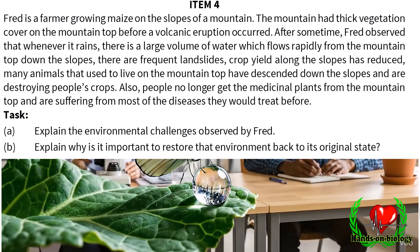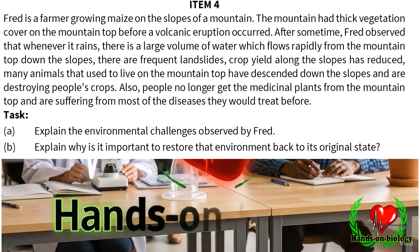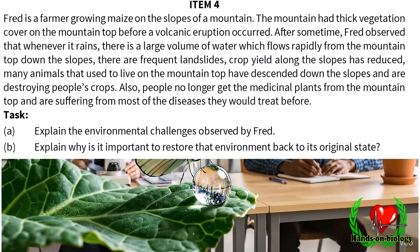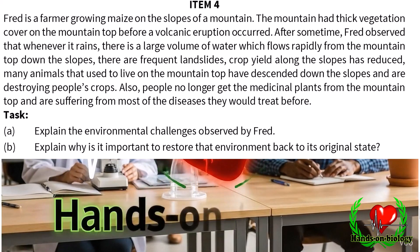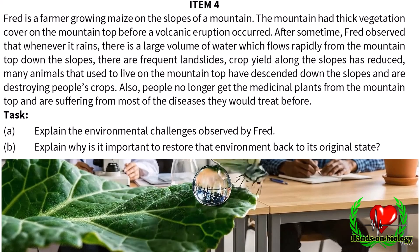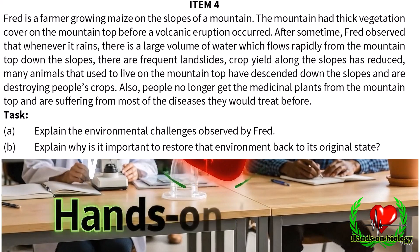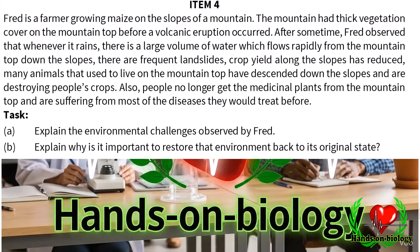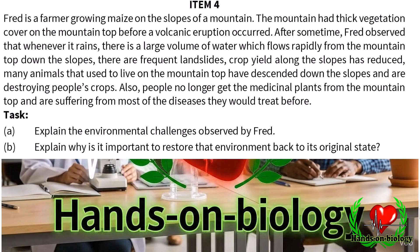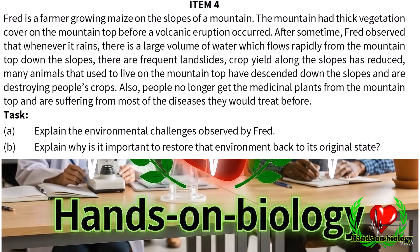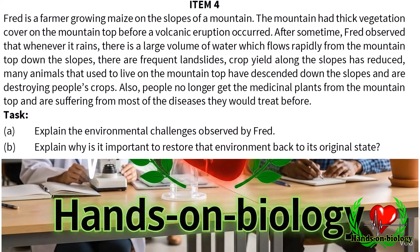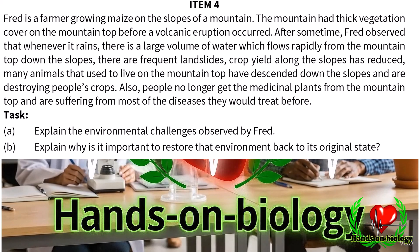Item 4: Fred is a farmer growing maize on the slopes of a mountain. The mountain had thick vegetation cover on the mountaintop before a volcanic eruption occurred. After some time, Fred observed that whenever it rains there is a large volume of water that flows rapidly from the mountaintop down the slopes. There are frequent landslides, crop yield along the slopes has reduced, and many animals that used to live on the mountaintop have descended the slopes and are destroying people's crops. People no longer get medicinal plants from the mountaintop and are suffering from diseases they would have treated before.